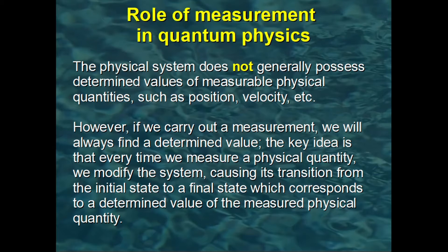In classical physics, when we make a measurement, we simply become aware of a property that was already possessed by the system, even before we measured it. In contrast, in quantum physics, the physical system generally does not possess determined values of measurable physical properties, such as position or velocity.